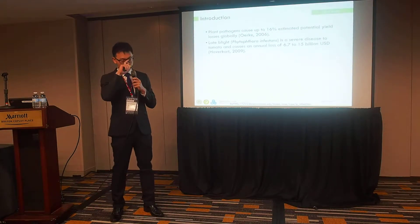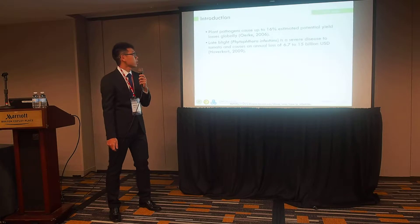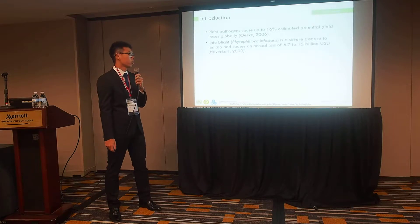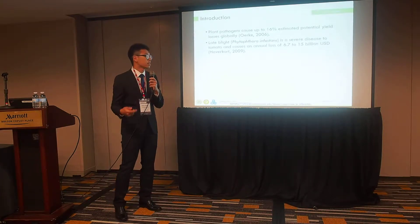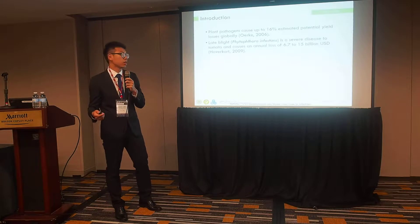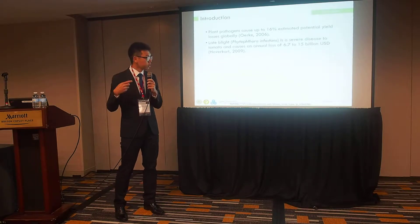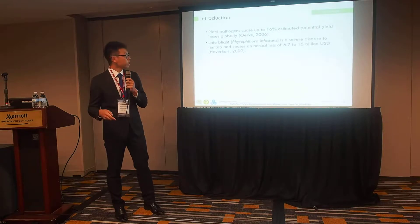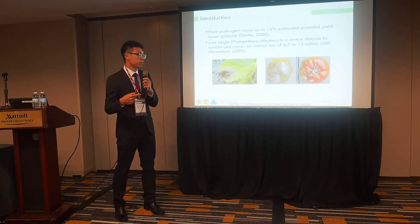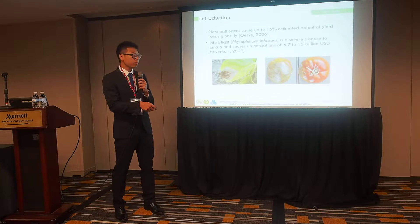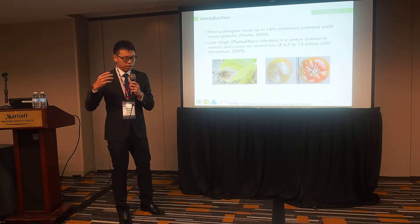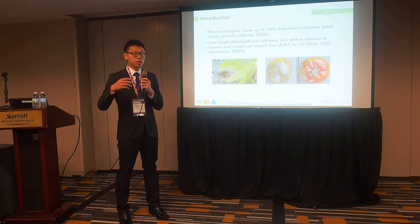Let's start with the introduction. In a research in 2006, plant disease caused up to 16% estimated potential yield loss globally. Late blight is a severe disease to tomato and caused an annual loss of 6.7 to 15 billion USD. After a plant is infected by late blight, the leaf will appear lesions and may infect the fruit of tomato, so the tomato cannot be sold or eaten — a very bad thing for the farmer.